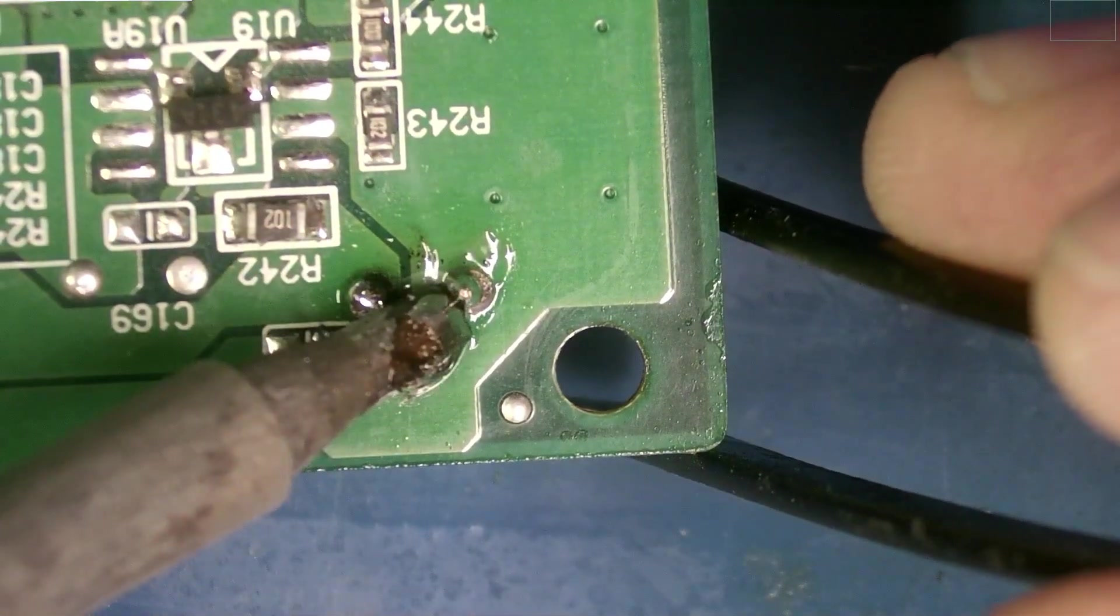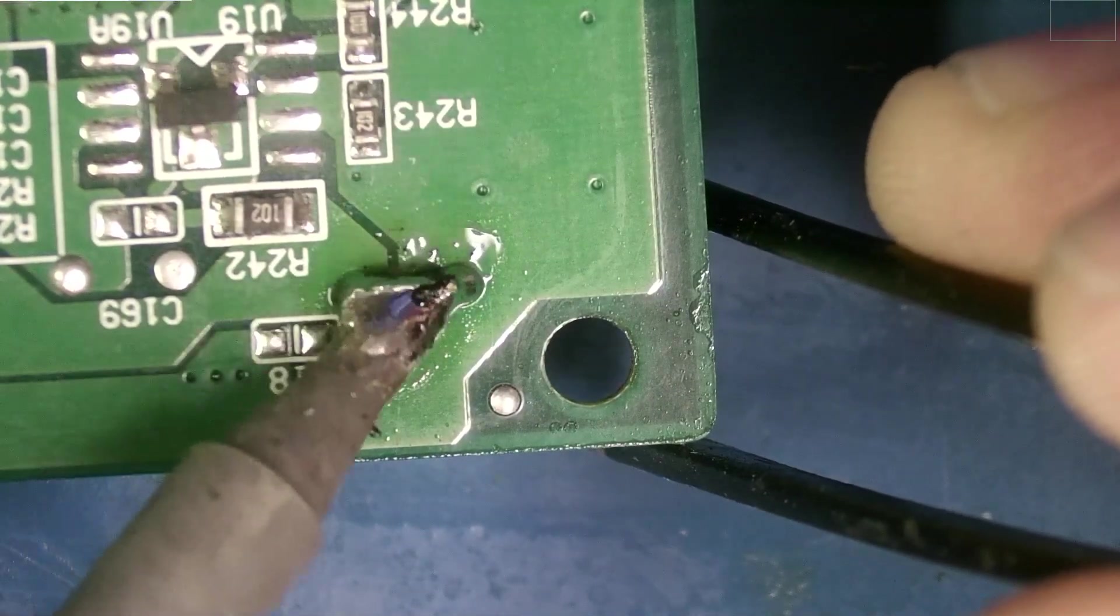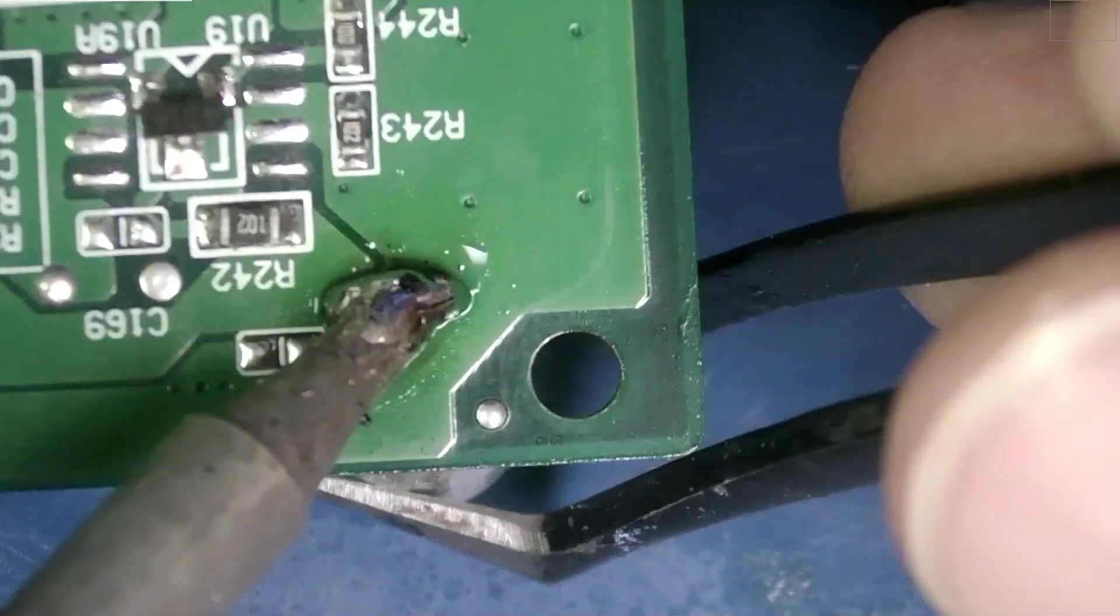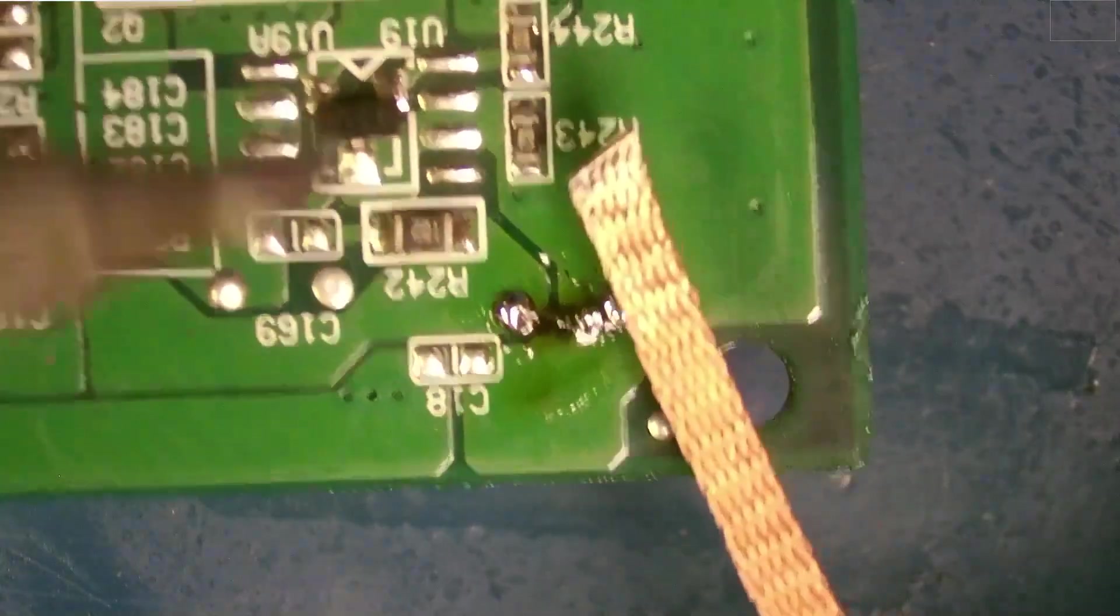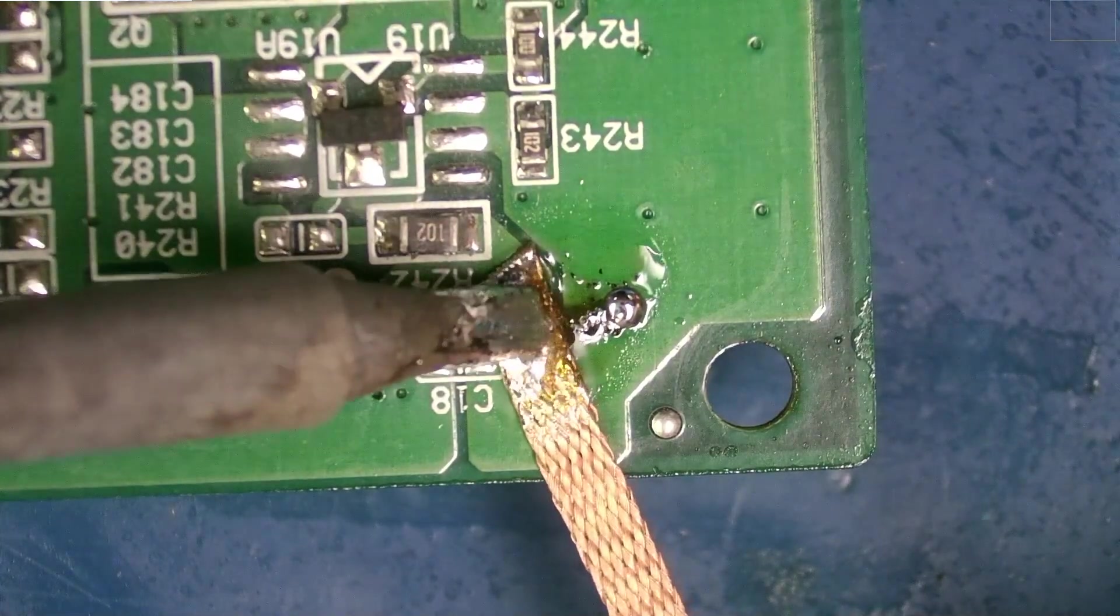Then with my tweezers, I'm going to grab the capacitor from the other side and melt both pins at the same time and yank it out. Now with my desolder wick, we'll go ahead and clear off all that excess solder.